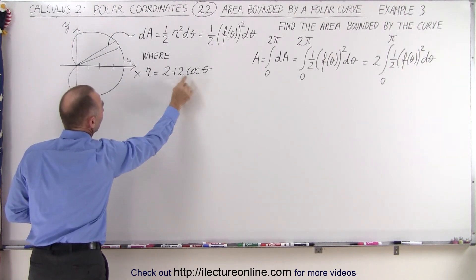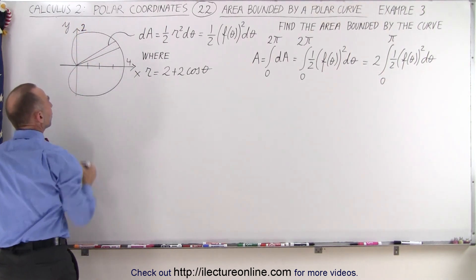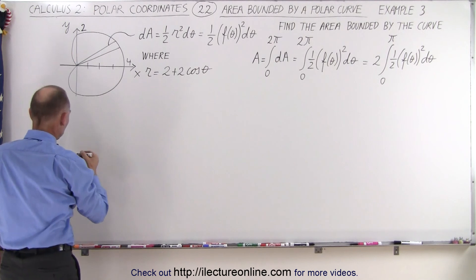So 2 times 0 is 0, plus 2 puts you right here. So the value over here would be y equals 2, or in this case, r equals 2.